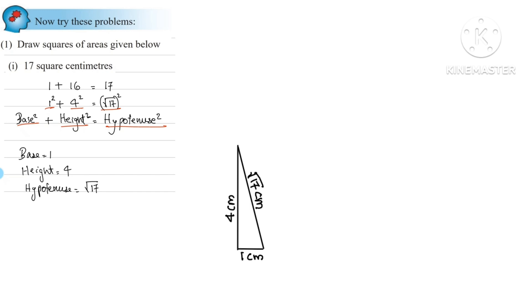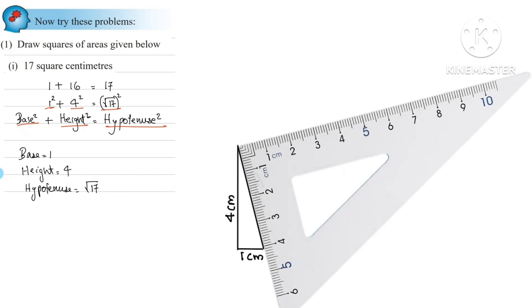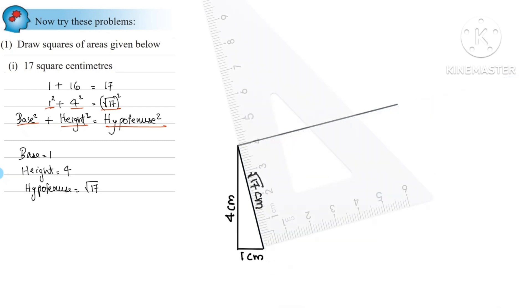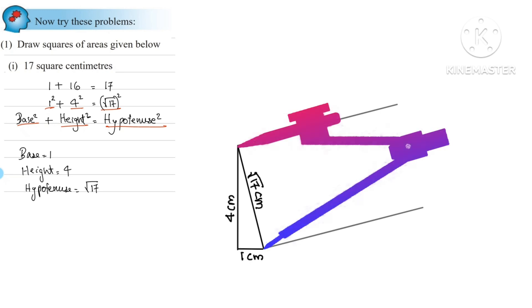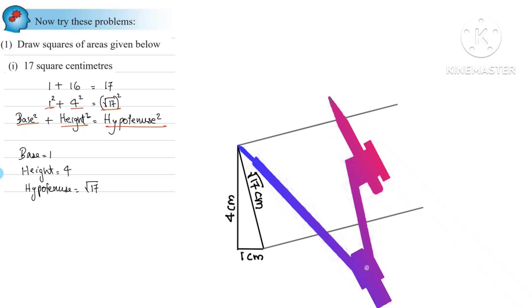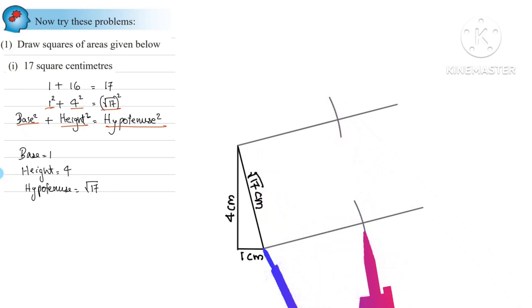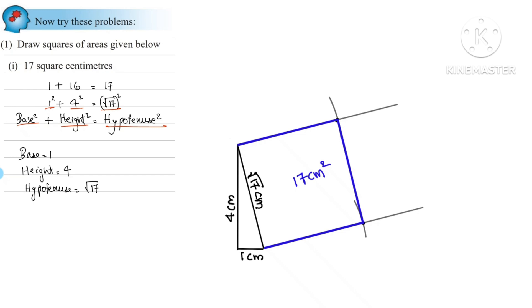The hypotenuse is root 17. There is a square on the hypotenuse. The area of that square is side times side, so root 17 into root 17 equals 17. We draw perpendicular arcs from the hypotenuse to complete the square. The square drawn on the hypotenuse has area 17cm².